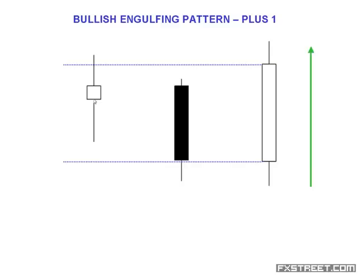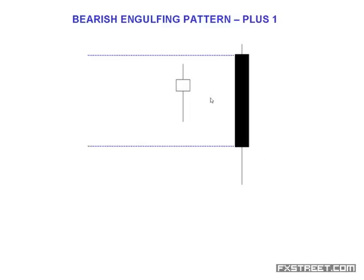This is a very high probability pattern that you're going to be heading upward. The same reference works to the downside: we have our standard bearish engulfing pattern where the downward day from open to close totally engulfs the previous day's up day from open to close. A plus one means we engulf one more day — again, just the open-to-close range. We are not concerned with engulfing the top or the low. This is where most students have difficulty; they've been taught that engulfing means engulfing the entire range, but we're only concerned with the open-to-close range.